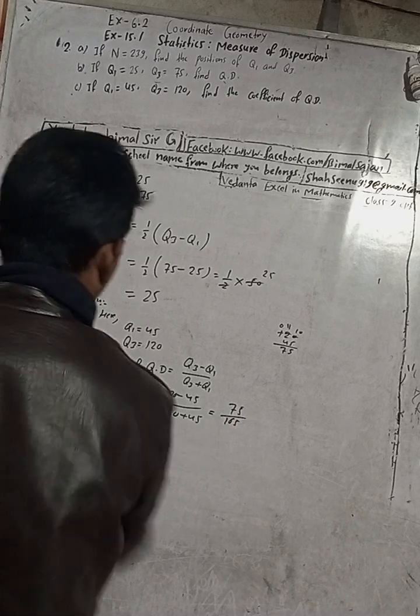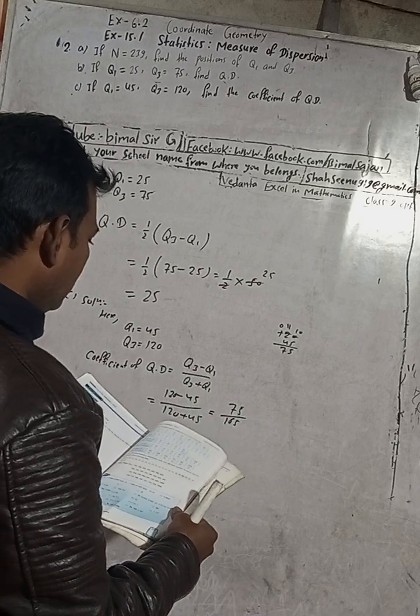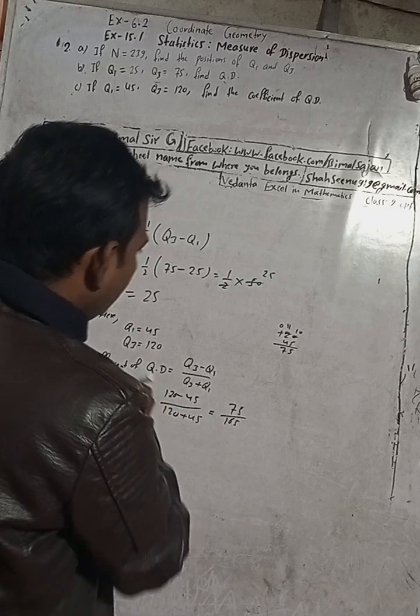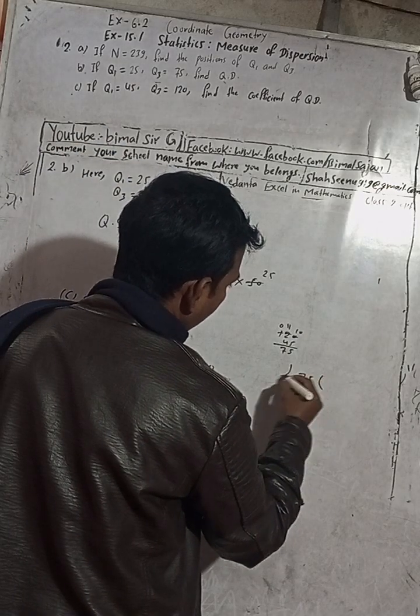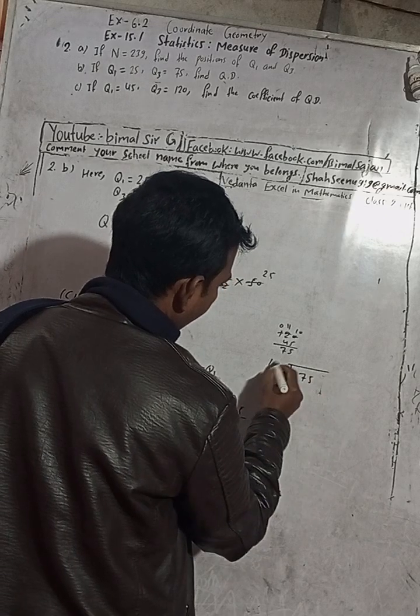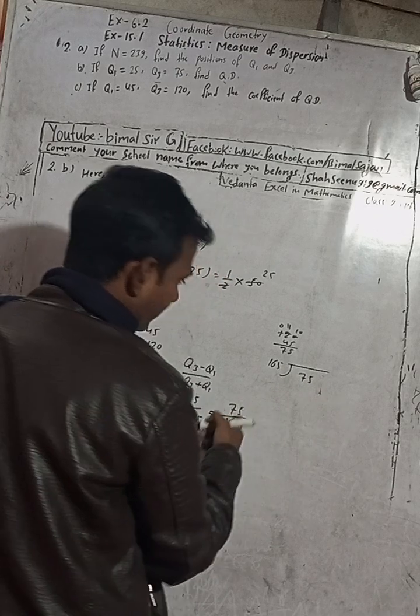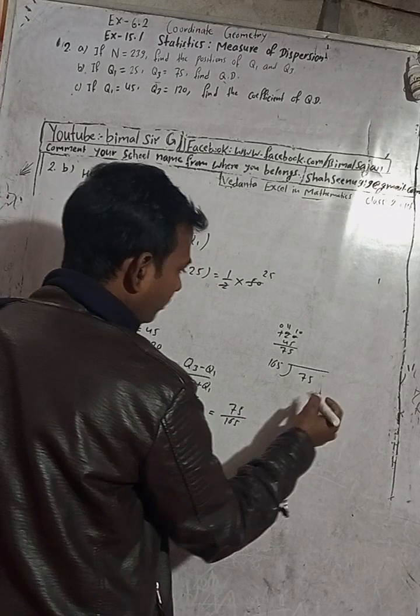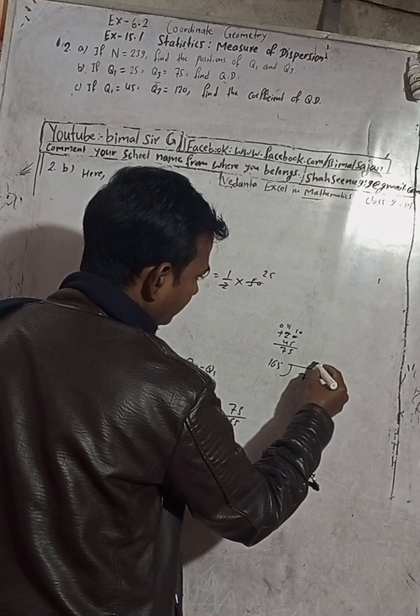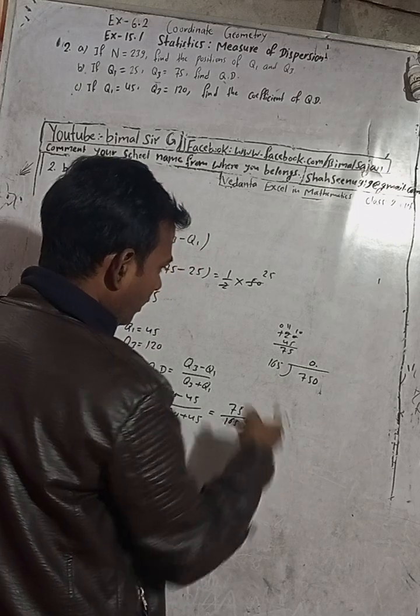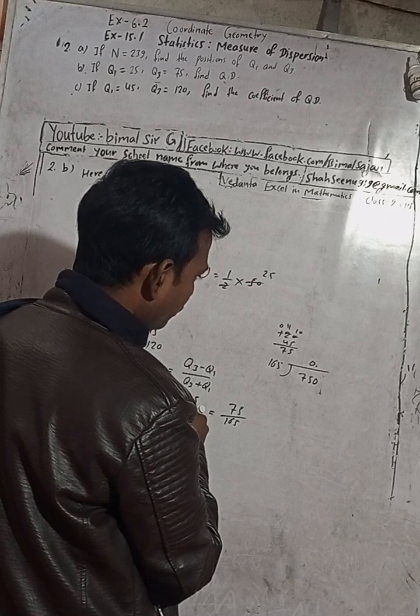When we add, 120 plus 45 equals 165. So the answer is 75/165. To get the answer without a calculator, we divide 75 by 165. This is the smaller number, this is the bigger number, so we add one zero here and take 0 point.